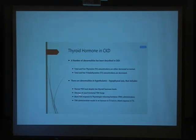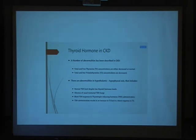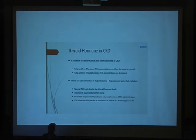There is a blunted pulsatile and circadian rhythm of TSH. There is no normal response to decreases or increases in T3 and T4. If we administer TRH, this results in an increase in T3, but only a blunted response in T4.